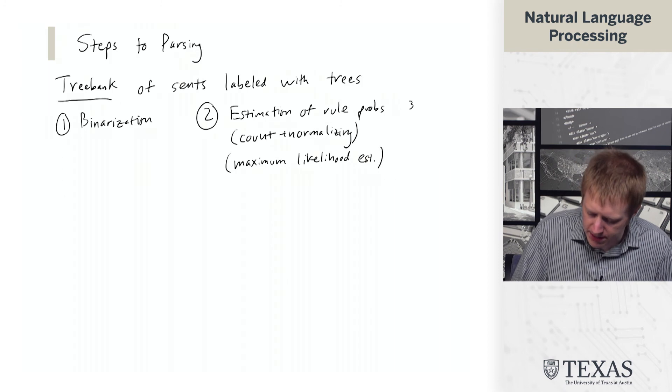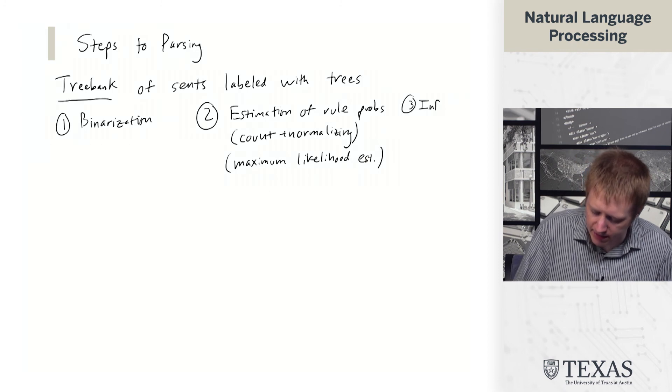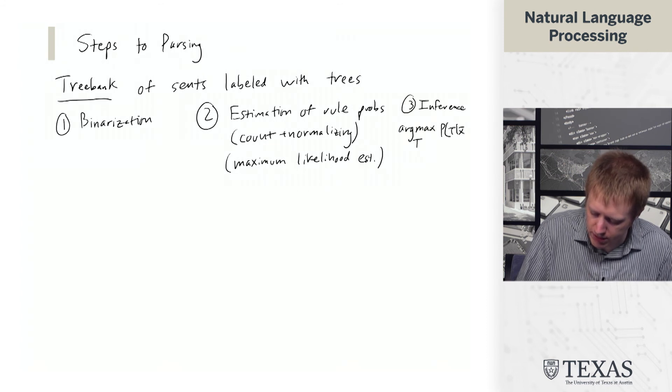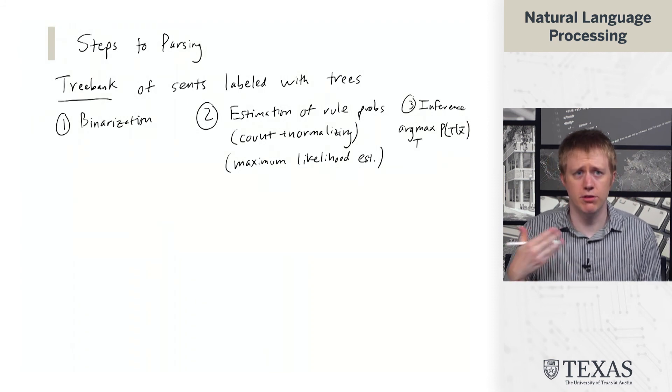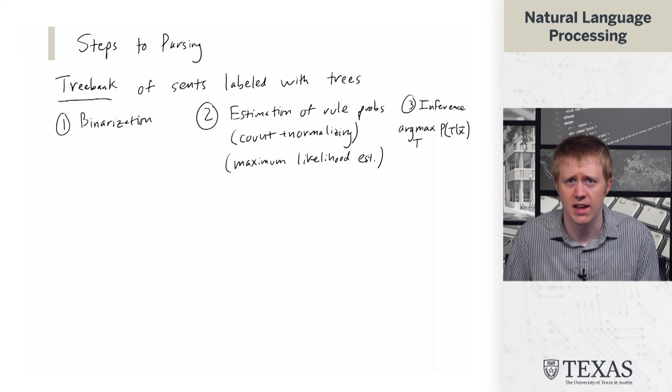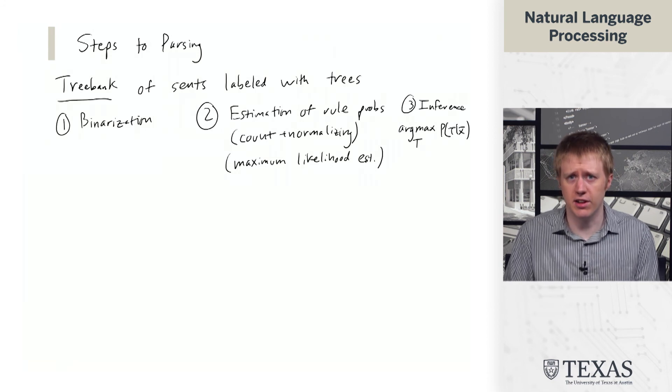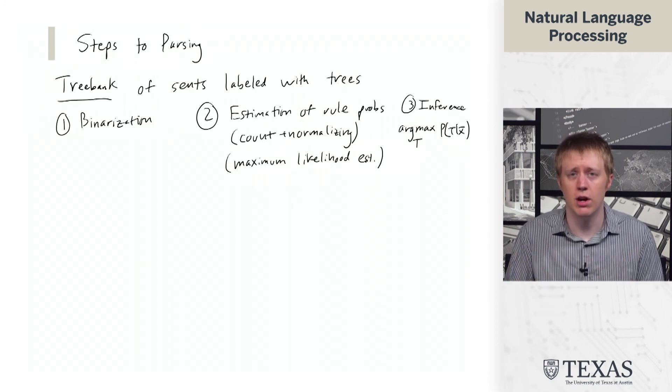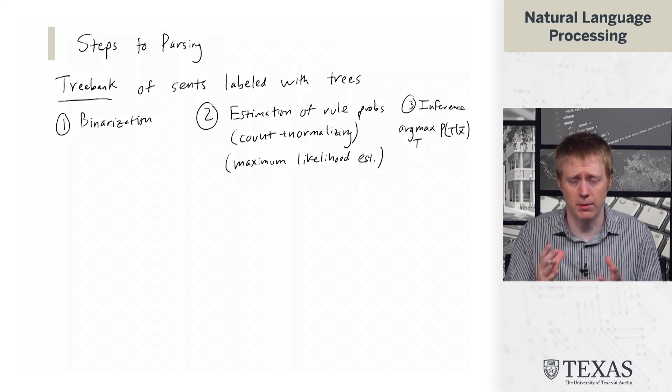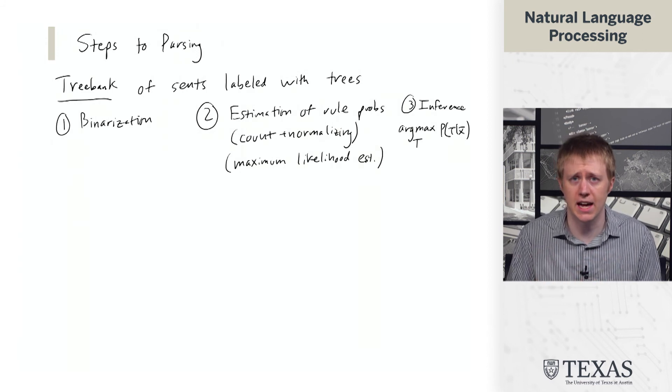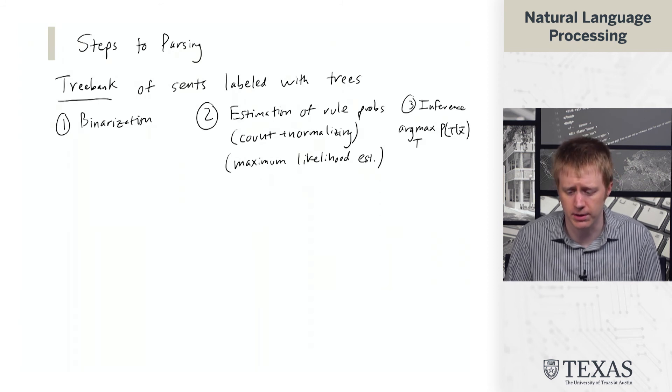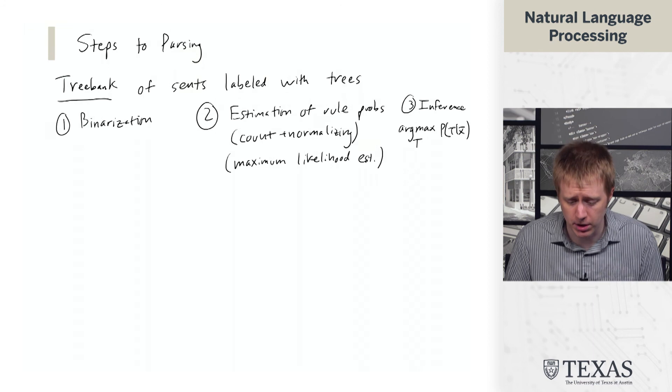The third piece is inference, asking about the most likely tree given a sentence. I give you a new sentence and we ask what is the tree that most likely generated this sentence. This is similar to hidden Markov models in the way the probability computation works out. We're going to have a dynamic program that allows us to do it.